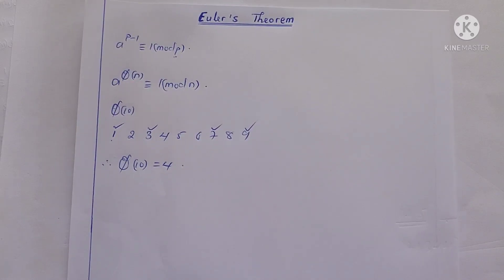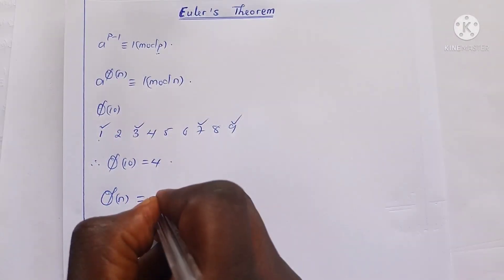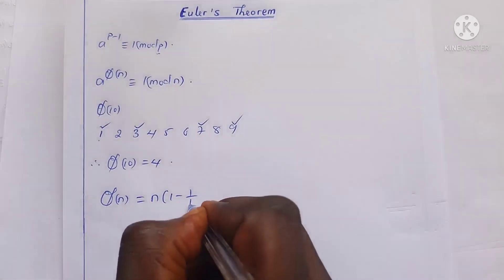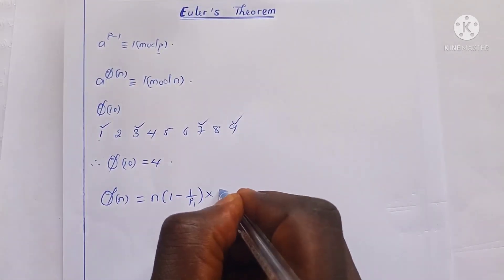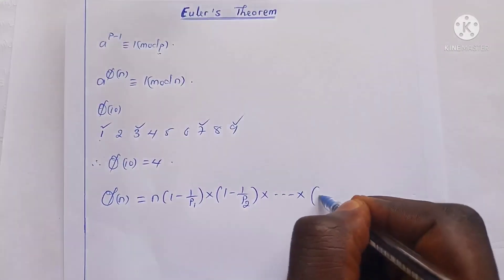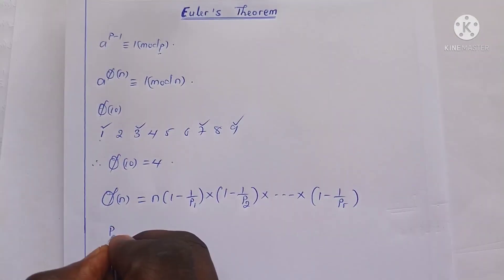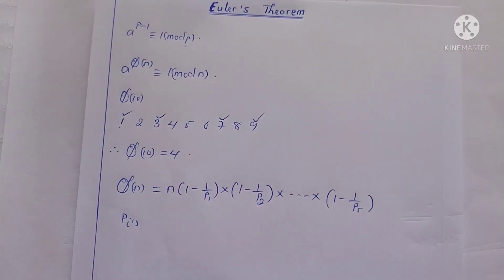What about phi of 1,000? Are we going to list all numbers between 1 and 999 that are co-prime to 1,000? There is a formula we are supposed to use. Phi of N is given by N times (1 minus 1/p₁) times (1 minus 1/p₂) times up to (1 minus 1/pᵣ), where the pᵢ's are the prime factors of N.